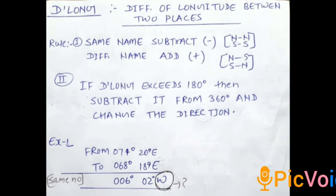We will be doing one example. We are moving from 074 degree 20 minute East to 068 degree 18 minute East. We have same name East-East, so we will subtract. We got the value 006 degree 02 minute, but how about the direction?